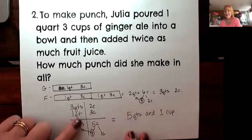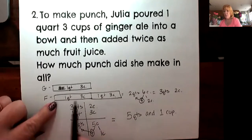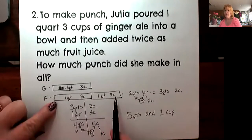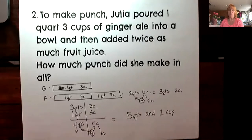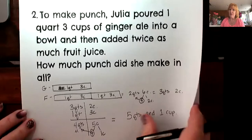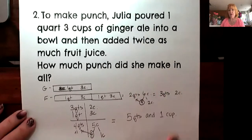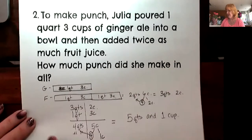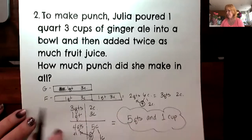I can't add anything up until I know how much fruit juice she has, which is why it's important to take a step-by-step approach and look at what they're asking. The answer to how much punch did she make in all: she made five quarts and one cup.